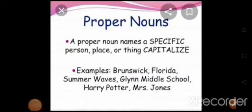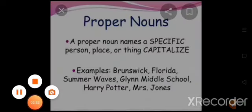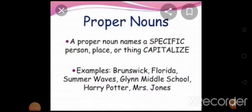Now let's discuss the kinds of nouns. The first is proper noun. A proper noun names a specific person, place or thing and is capitalised. Proper noun is the name given to a specific person, place or animal. For example, names of places, rivers, oceans, seas, organisations, famous buildings, monuments, languages, months, days of the week, titles, festivals and special days, books, films and newspapers. A proper noun always begins with a capital letter.